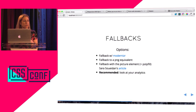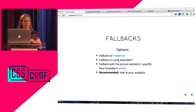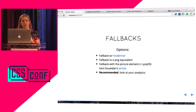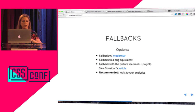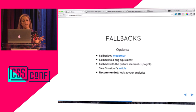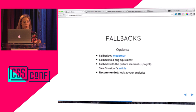Fallbacks — there are really good options. I use Modernizr; I think it's a great thing. Some people use @supports too. I fall back to a PNG equivalent a lot. If it's a standalone animation like the one I just showed, there's no reason not to fall back to an image. Sarah Soydan wrote a really great article about the picture element and polyfill for SVG. You should look at your analytics because that is a lot of work — consider whether you have that type of audience on older browsers to warrant all the picture element stuff.